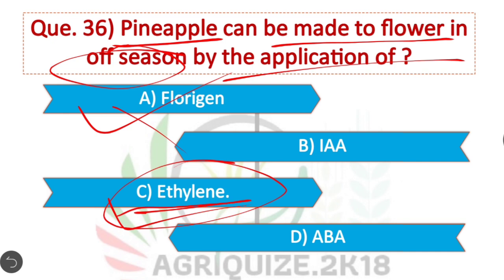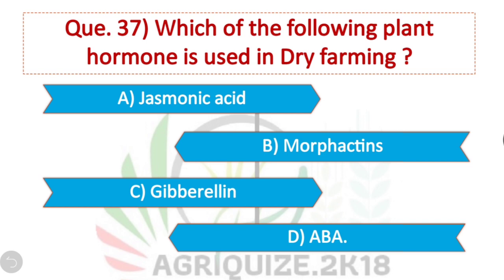Question 37: Which plant hormone is used in dry farming? Option D is correct. Abscisic acid is used in dry farming, also known as the stress hormone, which helps improve water use efficiency by controlling stomatal opening and closing.